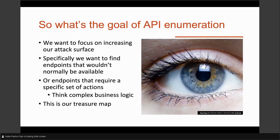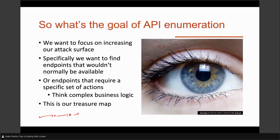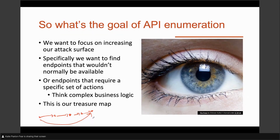We might also look for endpoints that require a specific sequence of actions. For example, making an order: pick a product, go to checkout, go to billing, and so on. Can you just put expensive stuff in the cart and not pay? Really, what we're trying to do is build a treasure map — list everything we can so we know what to look at and what to look for. It's going to be our guide throughout this process.